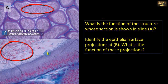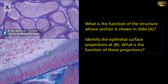Identify the epithelial surface projections at B and give their function. This is a higher magnification of the wall of the epididymis. You can see that there are columnar cells; the surface projections are called stereocilia. They are not cilia but are long microvilli. Their function is to absorb the excess fluid located within the lumen of the epididymis.